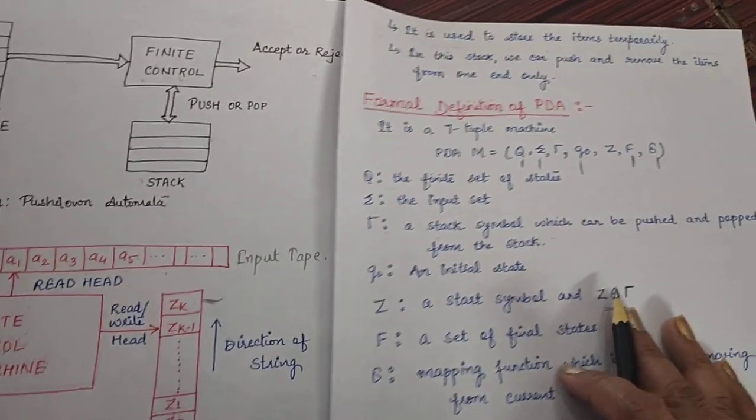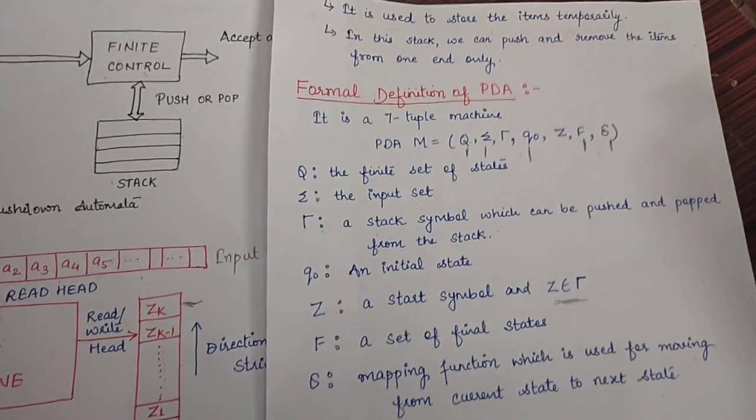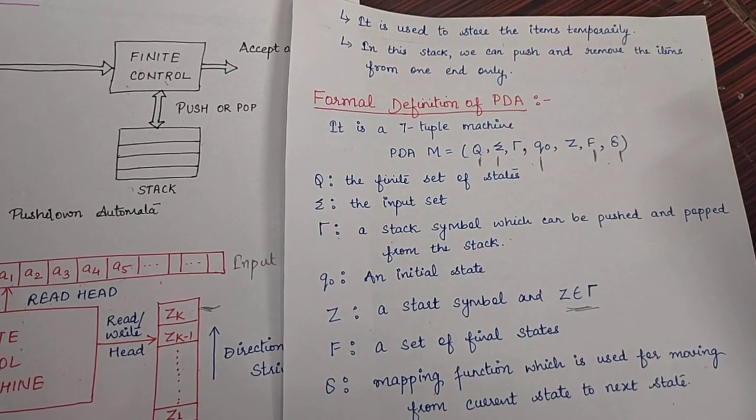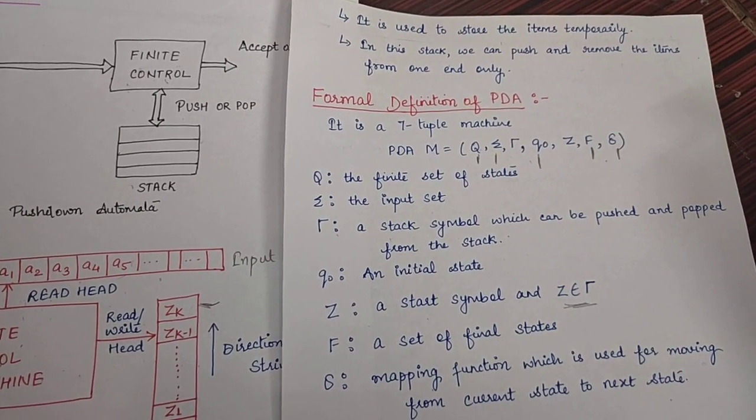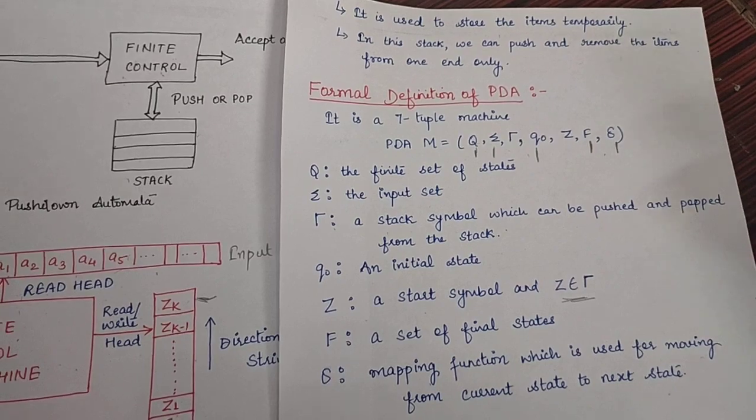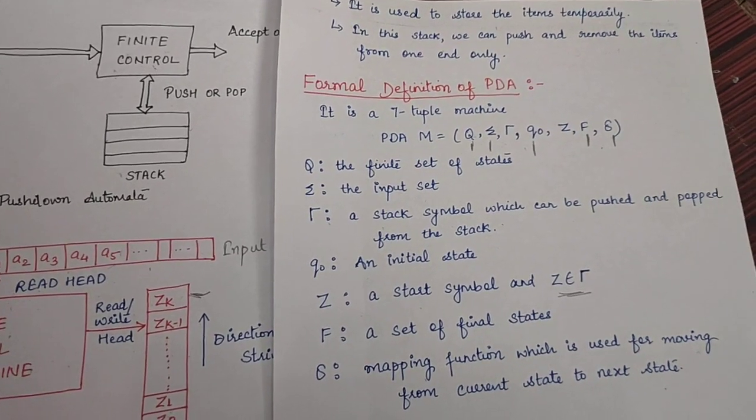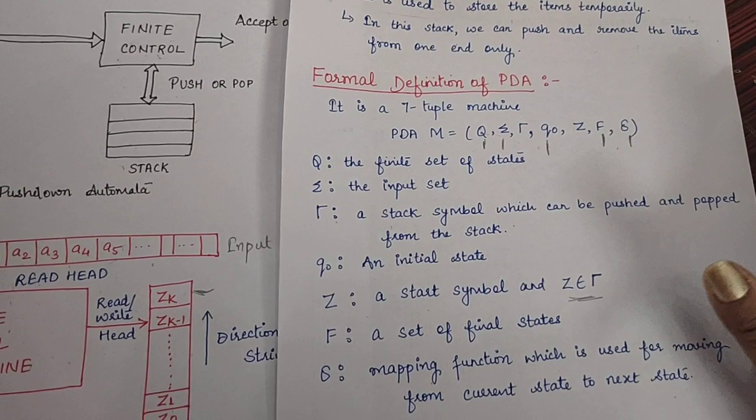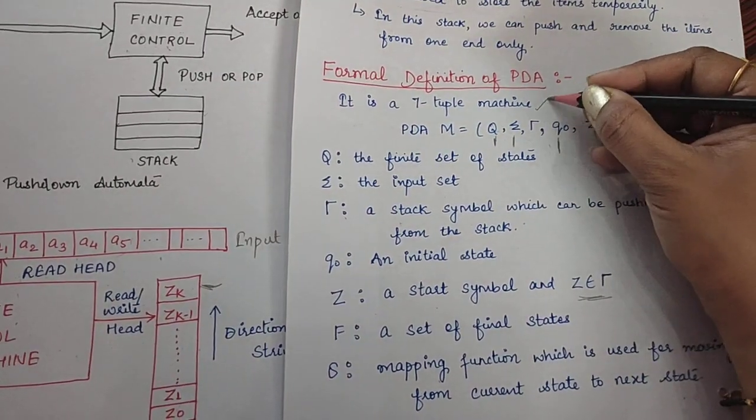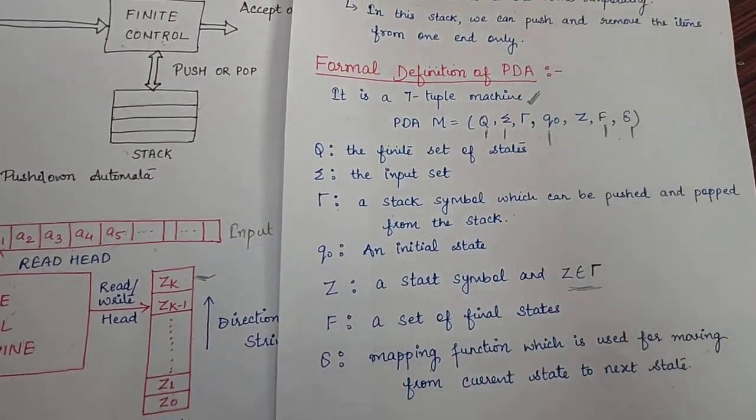Now, moving towards a more formal definition of pushdown automata. Like we have already seen that finite machines are defined by tuples. Here DFA and NFA, they are defined by 5-tuple, but pushdown automata is defined by 7-tuple. So, it is basically a 7-tuple machine.